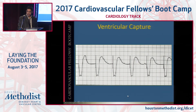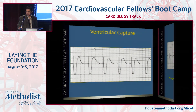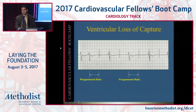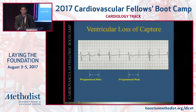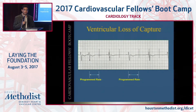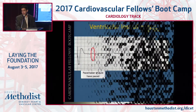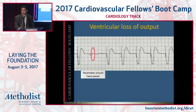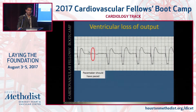Ventricular capture: every pacing spike should be followed by a QRS. Ventricular loss of capture — you can see pacing spikes marching through at around 75 beats per minute, and not one of them has a P wave or QRS following it. This is a situation where either the lead is floating or the output is programmed too small. Failure to output is also dangerous: if you see pacing spikes followed by QRSs and then a pacing spike is simply absent where one is expected, that's a real hardware problem in the pacemaker. If the patient is pacemaker-dependent, this needs to be fixed right away.